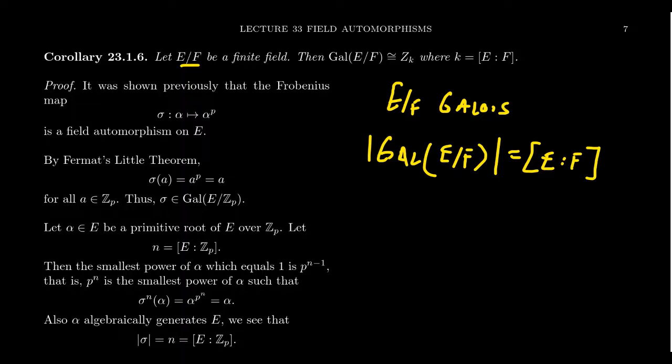F does not necessarily have to be the prime field Z_P, it could be but it doesn't have to be. We're going to prove that the Galois extension of E over F is always cyclic, and it's going to be the cyclic group of order K, where K is the degree of the extension.